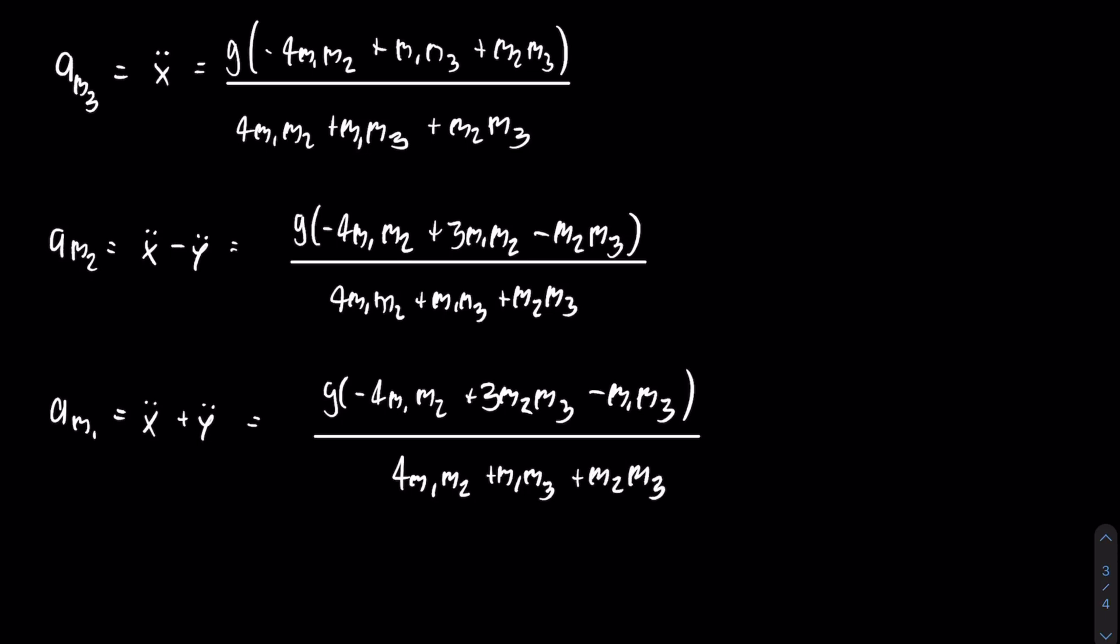And this is it. This is the conclusion to this two-part video. We have arrived at the equation for the acceleration of all three masses. If you really wanted an equation for the position of each mass, you would just take the integral with respect to time twice, and then you would have to plug in the constants of integration, which you would get from the initial conditions of the system. Also, just in case you forgot which mass is which, I have the diagram of the compound Atwood machine right here.